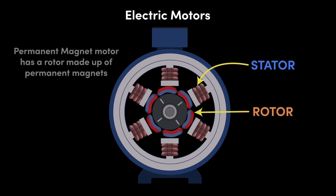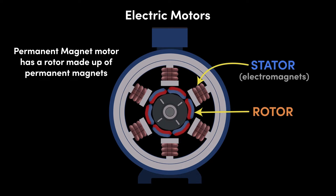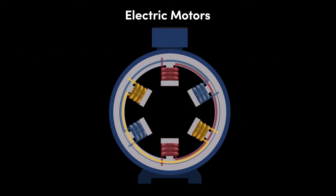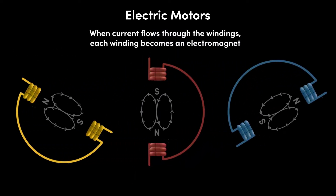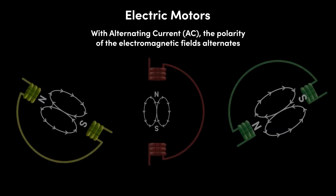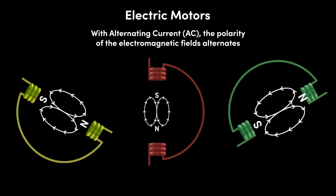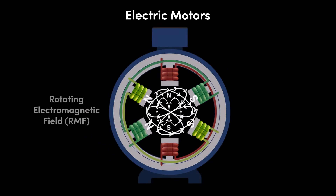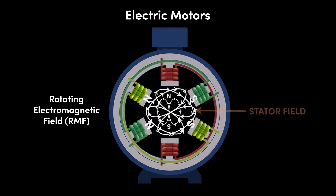This type of motor is called a permanent magnet motor. The stator is made up of electromagnets, which are copper wires wound into coils or windings, while the rotor is made up of permanent magnets. When electric current flows through the copper windings of the stator, each winding becomes an electromagnet, producing an electromagnetic field. Since this is an alternating current, with the direction of current alternating backwards and forwards, the polarity of the electromagnetic fields also alternates. The alternating electromagnetic fields from each winding combine to give a rotating electromagnetic field, or RMF, which rotates around the stator. We call this the stator field.